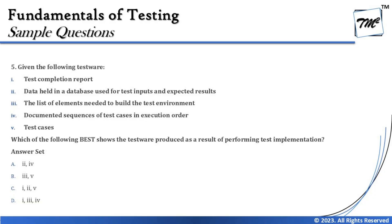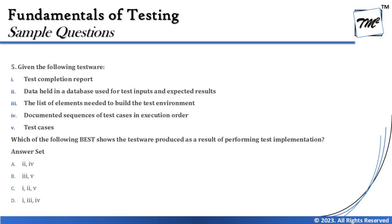Starting from the top: the test completion report — we should have no worries about that. It happens in the test completion phase because the test completion report is also called the test summary report and is generally created as part of the test completion phase. Data held in a database used for test inputs and expected results — as part of test implementation phase, we prepare the data and load it into the environment. So the database being loaded with input data is an activity that takes place as part of the implementation phase.